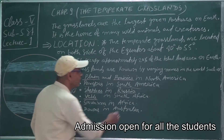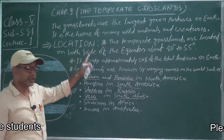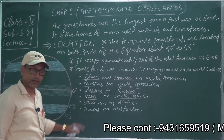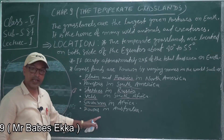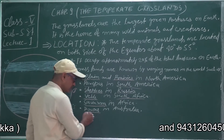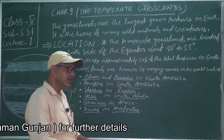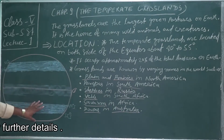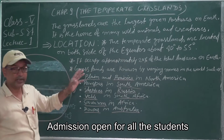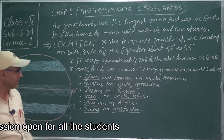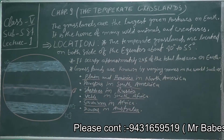In South Africa grasslands are known as Veld, but across whole Africa they are called Savanna. In Australia grasslands are known as Downs. So I have explained the locations and the different names by which grasslands are known across different continents. Now I will show you grasslands on the world map.